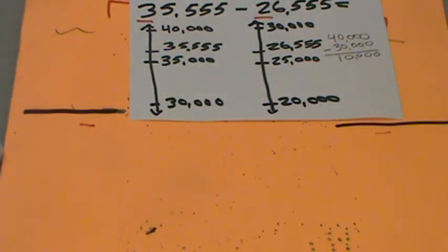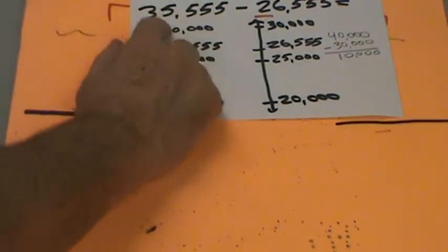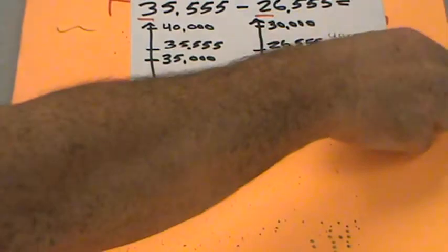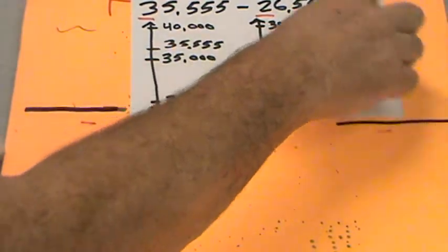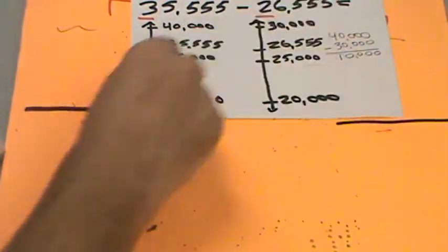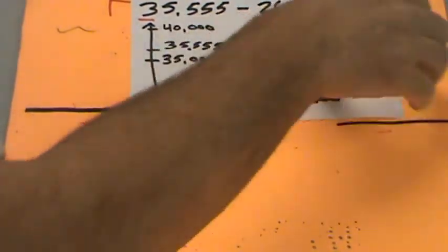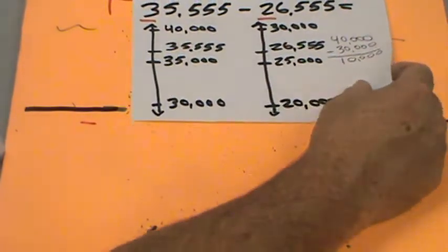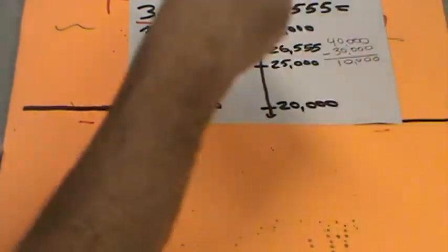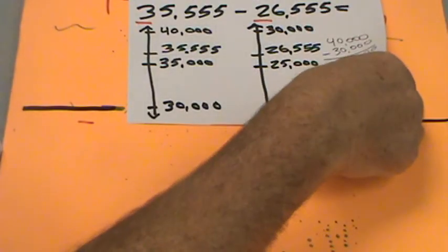Let's say someone bought a car at a dealership for one price and someone else bought the same car for the other price. One person could say, 'You spent about ten thousand dollars more than I did.' But can we get a more exact estimate? Let's try rounding to the nearest thousand and find out.